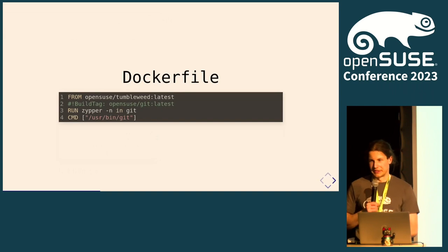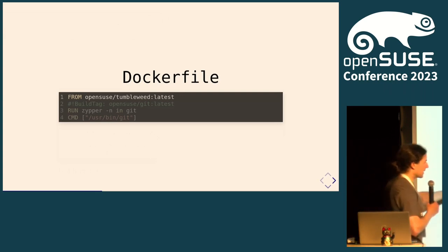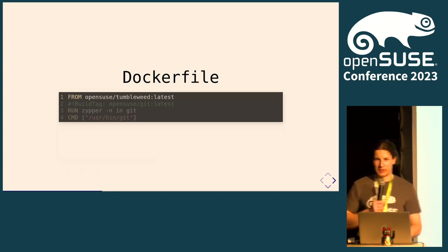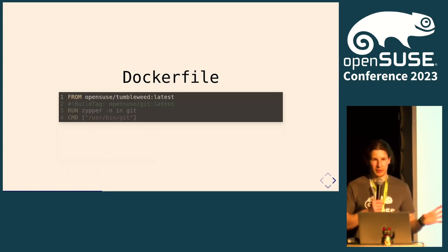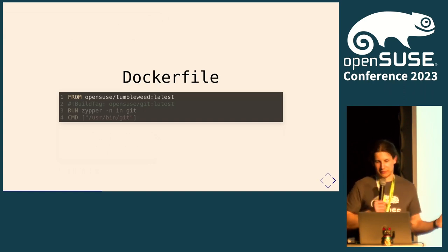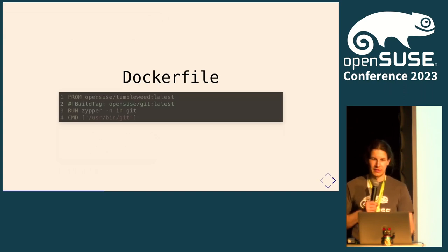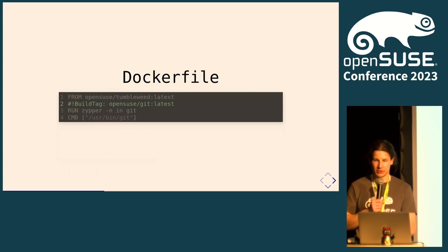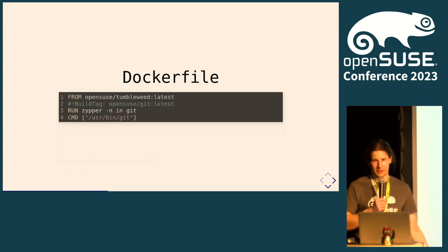Now we get into the peculiarities of building containers from Dockerfiles. The FROM line tells OBS what your base image is. OBS takes this container image from your repositories without the registry prefix — in this case 'opensuse/tumbleweed', which is also what gets published on registry.opensuse.org. You also have to add a magic comment that tells OBS to add a tag to the finally built image. Then you can do whatever you like — in this case, installing git, and adding the rest of your Dockerfile.